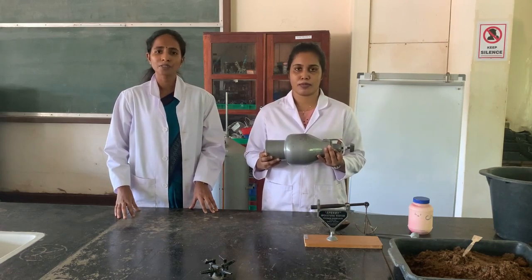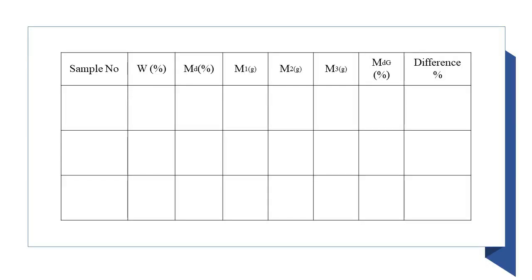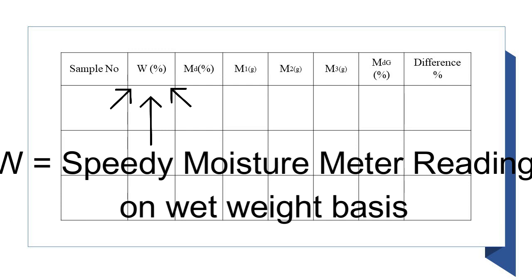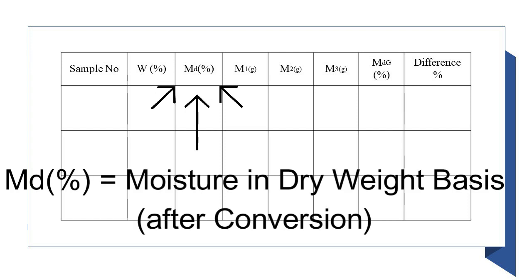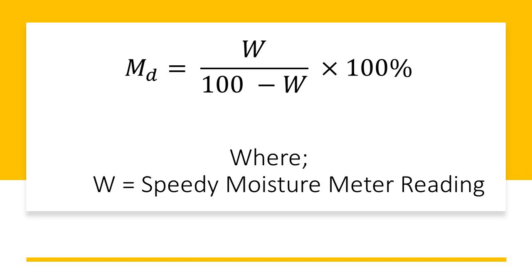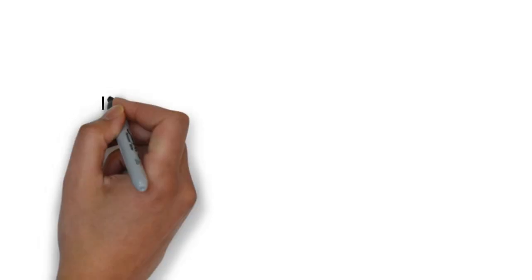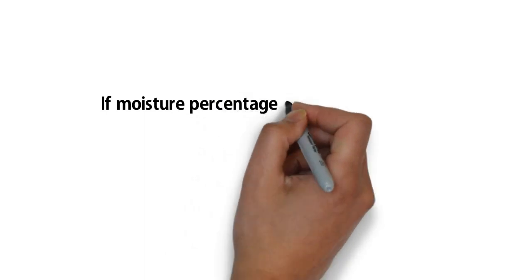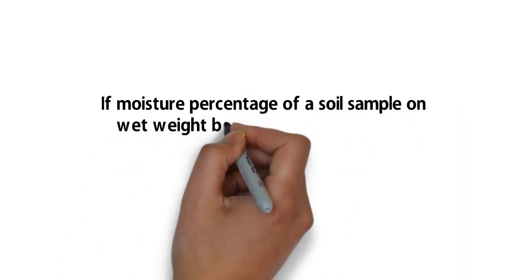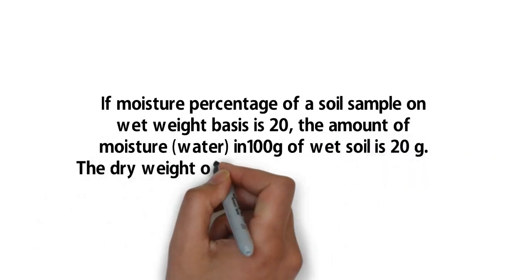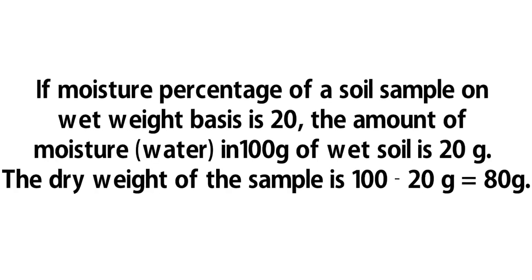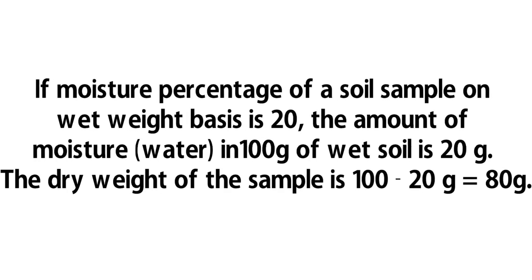You have to repeat this process for about 3 minutes. This is the way to record data. W is the speedy moisture reading which is on a wet weight basis. Md is the moisture percentage in dry weight basis which is derived from W. This percentage can be computed using this equation where W is the reading from the speedy moisture meter. For example, if the moisture percentage of a soil sample on wet weight basis is 20, the amount of water in 100 grams of wet soil is 20 grams. The dry weight of the soil sample will be 100 minus 20, that is equal to 80 grams.